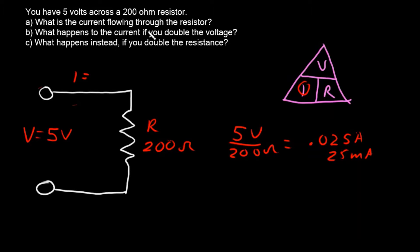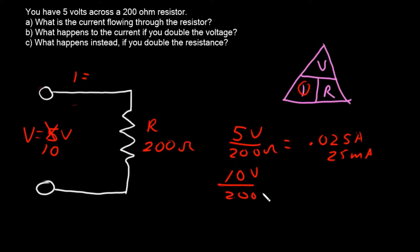Part B: what happens to the current through the resistor if you double the voltage? Since Ohm's Law is about proportionality, if you double the voltage to 10 volts divided by 200 ohms, the current doubles, which gives you 0.05 amps or 50 milliamps.